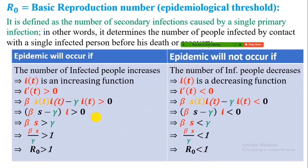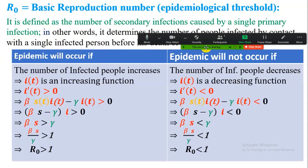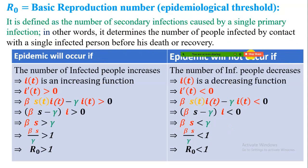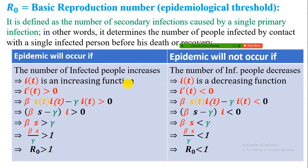Now, what is the basic reproduction number R₀, or the epidemiological threshold for the SIR model? It is defined as the number of secondary infections caused by a single primary infection — in other words, it determines the number of people infected by contact with a single infected person before his or her death or recovery. The basic reproduction number is very important in epidemiology because an epidemic will occur if the number of infected people increases — mathematically, if I(t) is an increasing function.